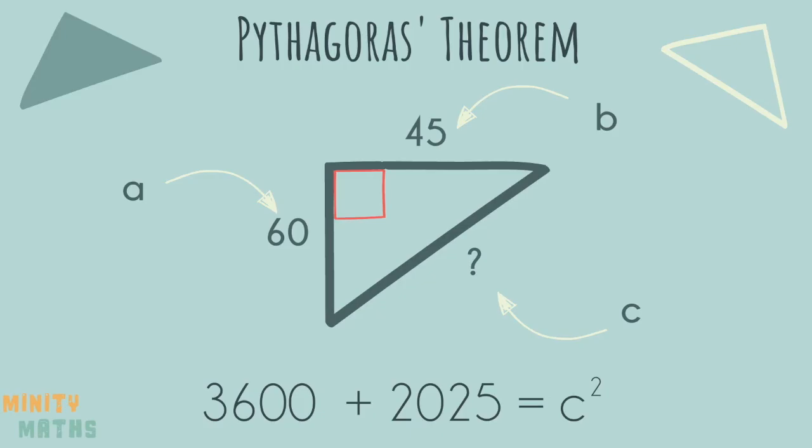Now add these numbers together. 5625 is equal to c squared.